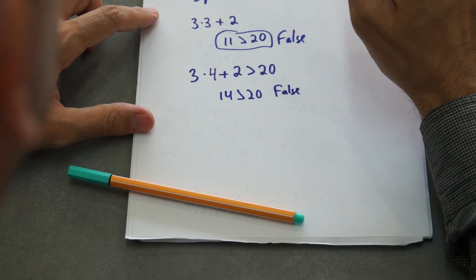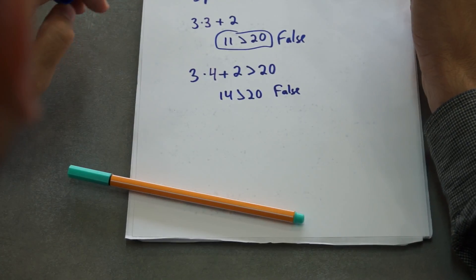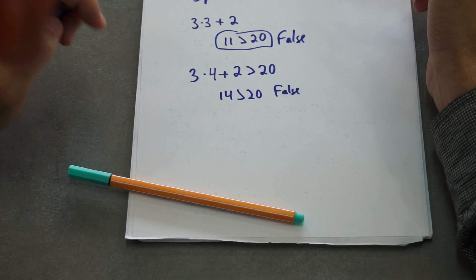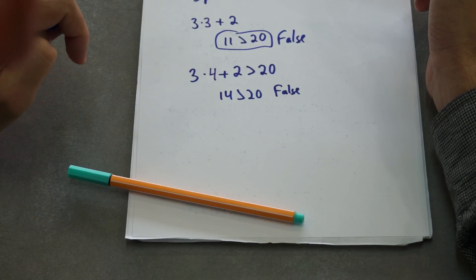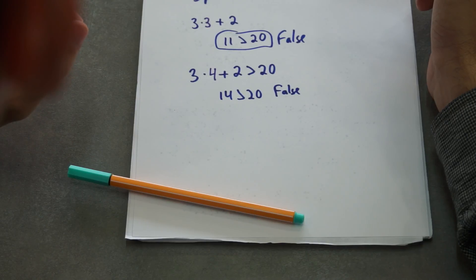So in open sentences, what we do is just we replace this set and we will check if it's false or if it's true. Basically, that's what we do. We replace each value of the inequality until answers match.